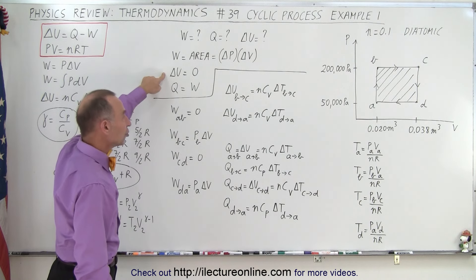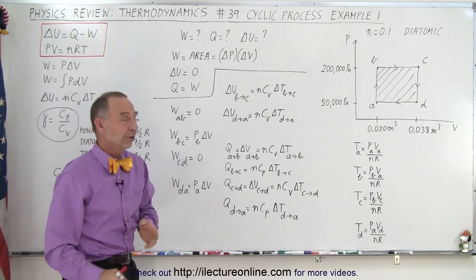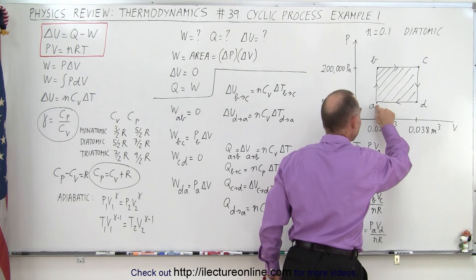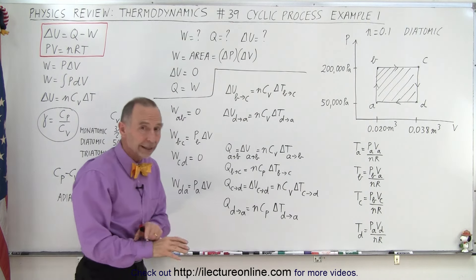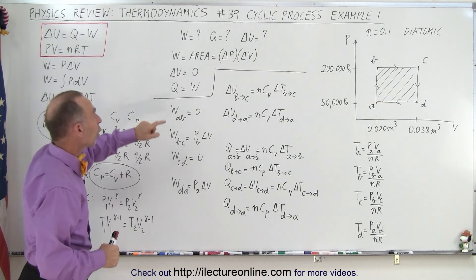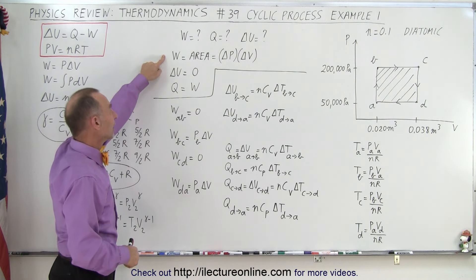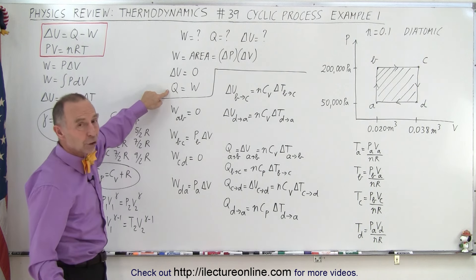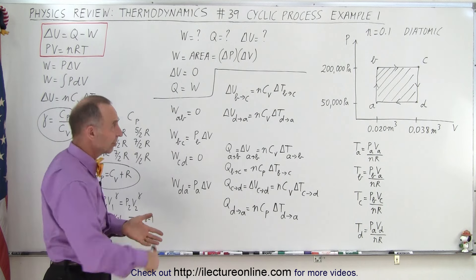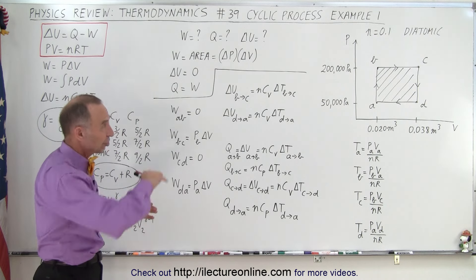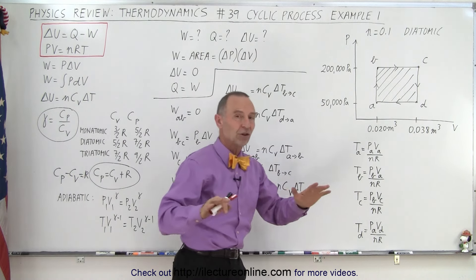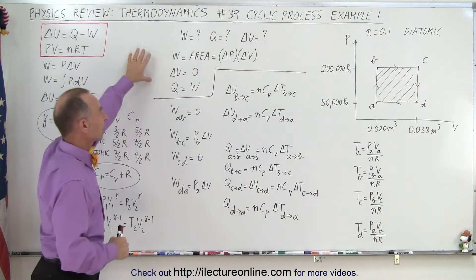The change in internal energy of a complete cycle is always zero. Since we end up in the same place we started, and so the conditions here at A is the same as they were when we started in the previous cycle, there's no change in internal energy. Which means that all the work done by the cycle is provided for by the heat added to the cycle. So the amount of heat added to the cycle always equals the work done by the cycle, since the change in internal energy changes throughout the cycle, but when we get back to the same place we started at A, the change in internal energy is zero. And that's always the case. That makes it easy.